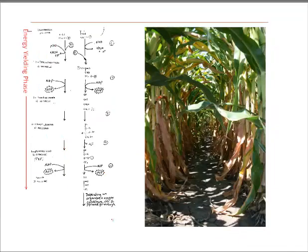Now we get into the energy yielding phase. Those two three-carbon molecules are going to have things happen to them that result in ATP not being invested anymore but actually being produced. During the energy investment phase, we had to invest two ATPs to destabilize glucose and get it to break apart. In this phase, four ATPs are going to be produced — we're finally starting to get a payoff, like planted seeds growing into something useful.